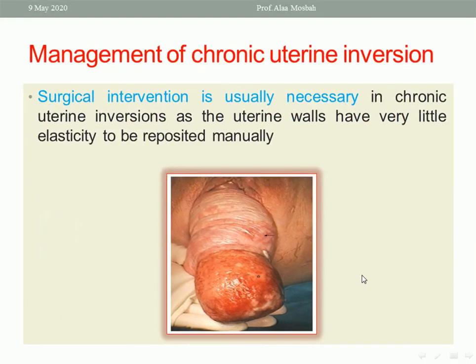Chronic uterine inversion requires surgical intervention because the uterine walls have very little elasticity and the cervical ring is stiff, making manual or hydrostatic repositioning ineffective.